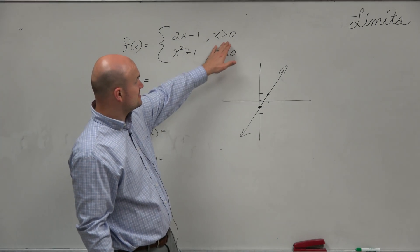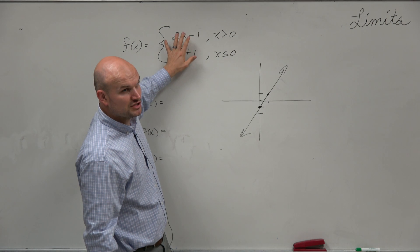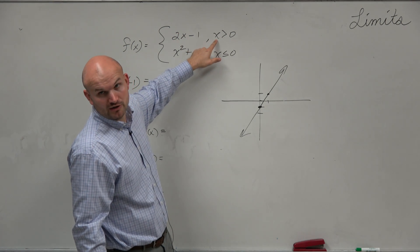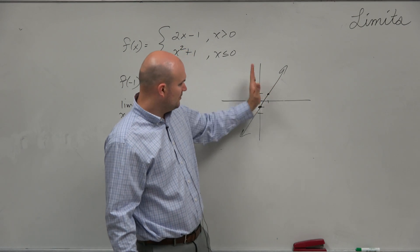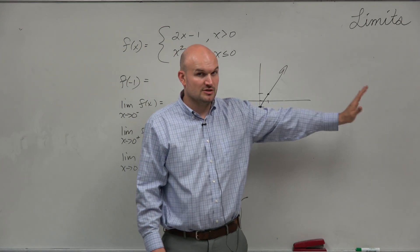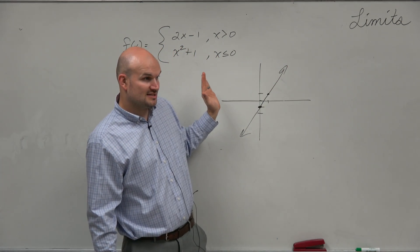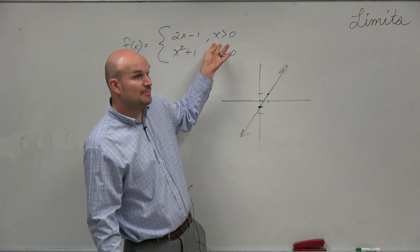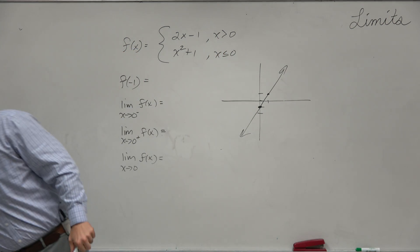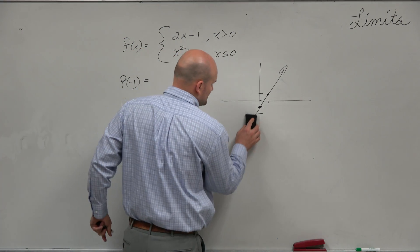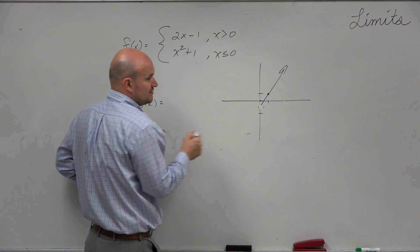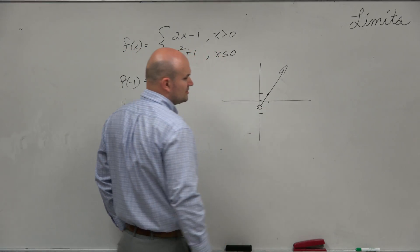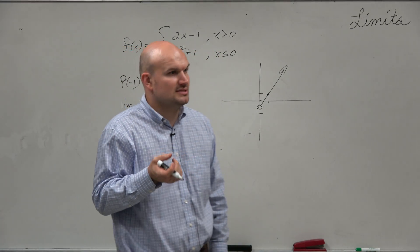It says I only want you to graph this for, or I only want this function to be used for values of x that are greater than 0. Well, the x values, the x-axis, is only greater than 0 when it's at the y-axis over, right? So everything to the left of the y-axis is negative x values, which are not a part of this function. So what I'm going to do is I'm going to erase that. And it also said x is greater than 0, not equal to. So I'm going to create a nice little dot, because it's an open point. It's not closed.